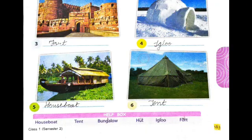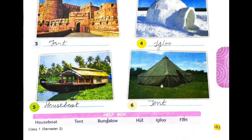The fifth one is a houseboat. To live in water, we use a houseboat. The last one is a tent. We use it for camping.